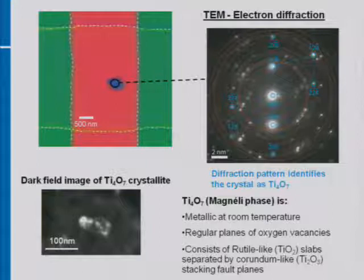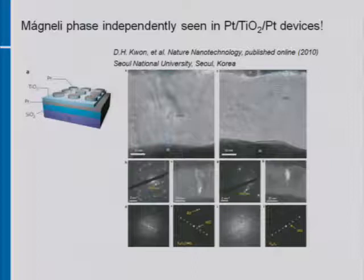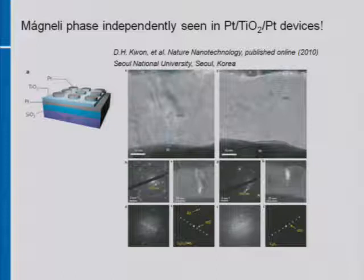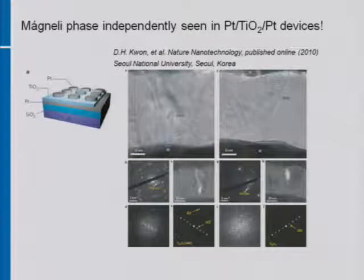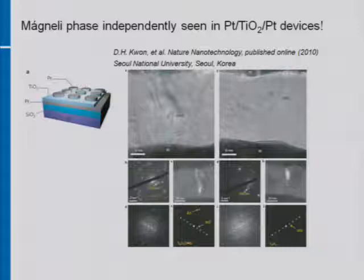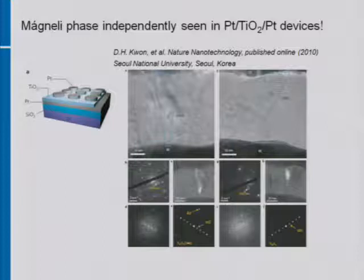We're not the only ones who have seen this Magnéli phase. Completely independent work from a group at Seoul National University — available online in Nature Nanotechnology — also looked at platinum/titanium dioxide/platinum devices. They operated larger devices, electrically switched them, cut out interesting regions, and did cross-section TEM with selected area electron diffraction. They were also able to identify Ti4O7 in small conductive nanochannels. This is completely independent confirmation, though of course it takes a little of our thunder away.